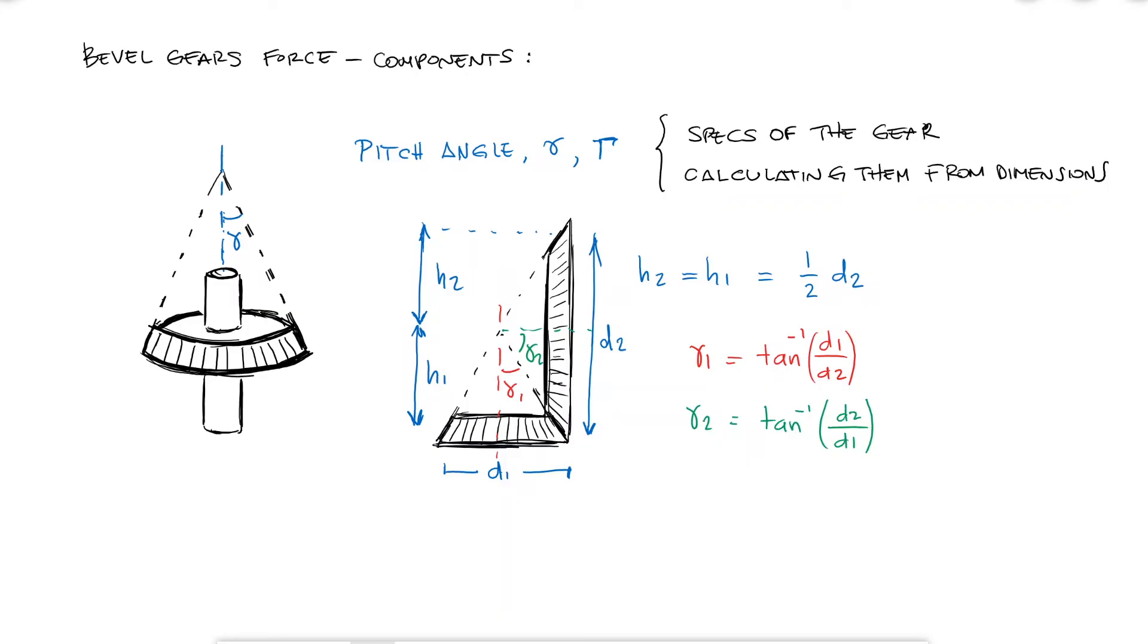Just like spur gears or helical gears, the information that you would find from the power and rotation speed values is the tangential component of the force, and this force, that in reality is the pressure, can be represented as a point load right at the pitch circle, which is the average between the two circles you see.